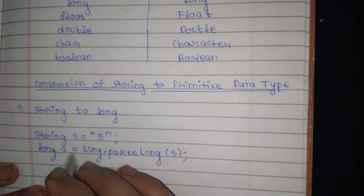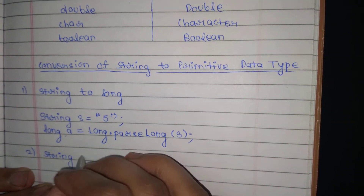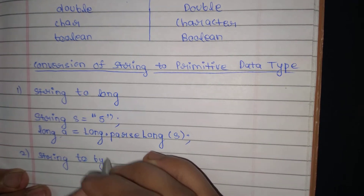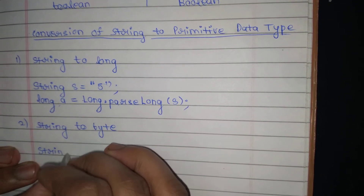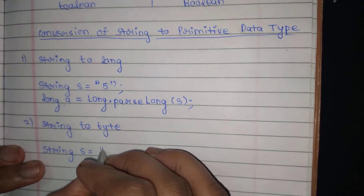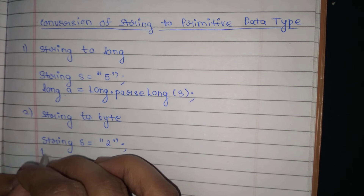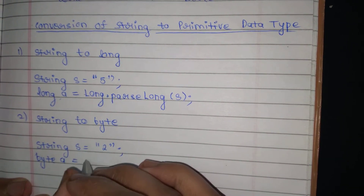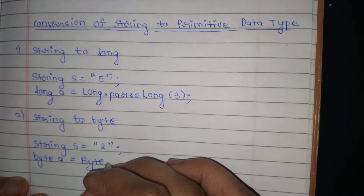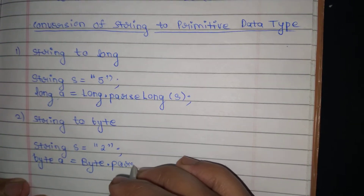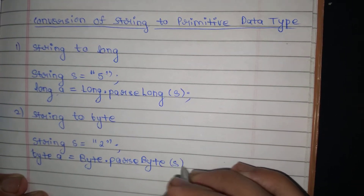Second: string to byte. Suppose I am taking a variable string s equal to 2, or you can take any value in double quotes. To convert it, byte a is equal to Byte — capital B, using its wrapper class — dot parseByte, in brackets s, the variable.